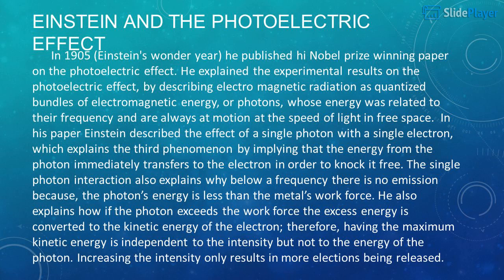Einstein and the Photoelectric Effect. In 1905, Einstein's wonder year, he published his Nobel Prize-winning paper on the photoelectric effect. He explained the experimental results by describing electromagnetic radiation as quantized bundles of electromagnetic energy, or photons, whose energy was related to their frequency and which always travel at the speed of light in free space. Einstein described the interaction of a single photon with a single electron, which explains the lack of delay by implying that the energy from the photon immediately transfers to the electron in order to knock it free.